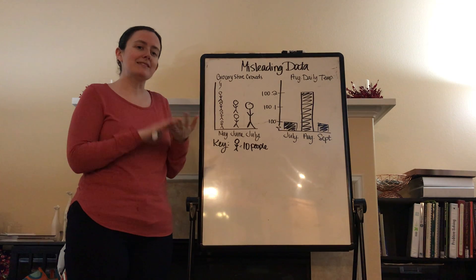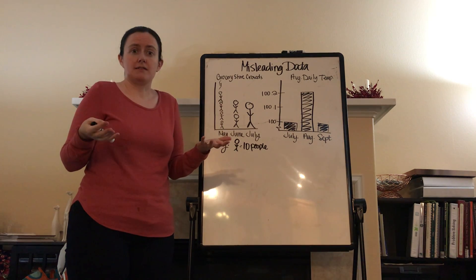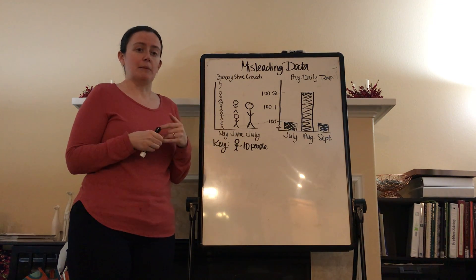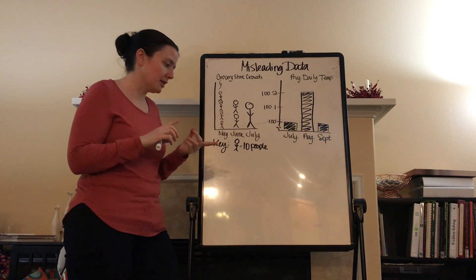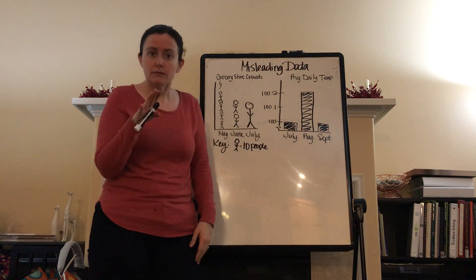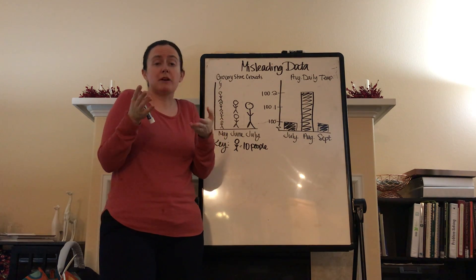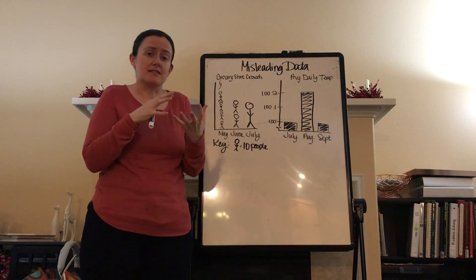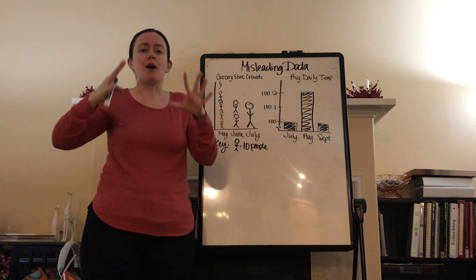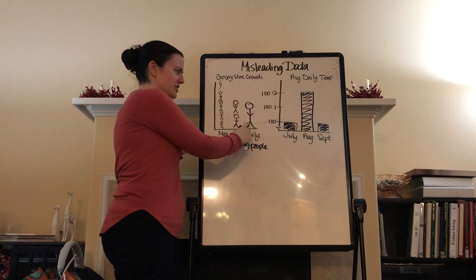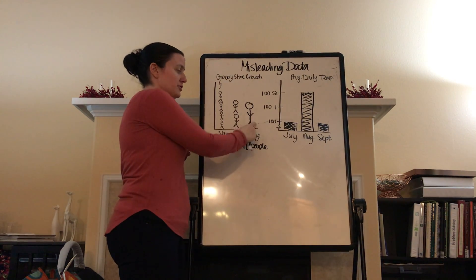So, how is this data misleading? Well, it's misleading because the people are different sizes. The people are different sizes. They should all be the same size. Now, in the book, they actually give you a really cool example where they use different images for the different parts of their pictograph. So, double check that. That's on page 396. So, on page 396, they do a really cool graph where they use different pictures. But, the different pictures, it's the same problem. The different pictures are different sizes.